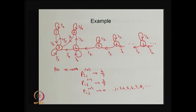As n tends to infinity, these probabilities are 0 for transient states 2, 4, 5 and so on, and these probabilities are independent of the initial state i. Whether i belongs to the closed communicating class or to the transient states, the stationary distributions for the transient states are all zeros.